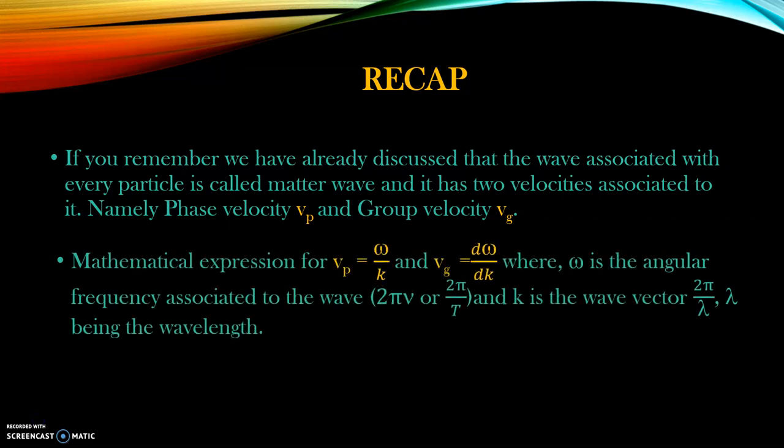The mathematical expression for phase velocity vp is given by omega by k, and group velocity is d omega dk. Here, omega is the angular frequency associated to the wave, which can be written as 2pi into the frequency or 2pi by the time period. And k is the wave vector 2pi by lambda, where lambda is the wavelength of this particular wave.